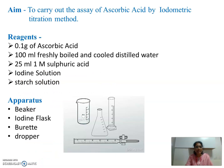The aim is to carry out the assay of ascorbic acid by iodometric titration method. The reagents required are: 0.1 gram of ascorbic acid (API drug), 100 ml of freshly boiled and cooled distilled water, 25 ml of 1 molar sulfuric acid, iodine solution, and starch solution as indicator. The apparatus required are: beaker, iodine flask, burette, and dropper.